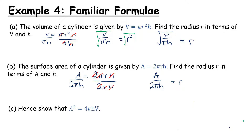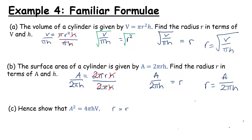Now for part c: hence show that a² = 4πhv. The word 'hence' is important — it means use the previous parts. From part a we have r equals the square root of V over πh, and from part b we have r equals a over 2πh. Since both expressions equal r, we can set them equal to each other: the square root of V over πh equals a over 2πh.